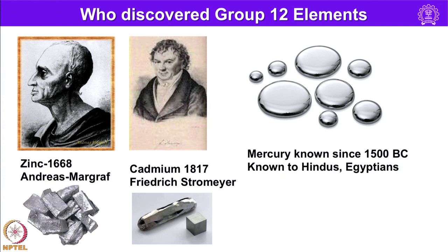Zinc was discovered in 1668 by Andreas Margraf. Cadmium was discovered in 1817 by Frederick Strohmeyer. Mercury has been known since ancient times — since 1500 BC — and was known to Hindus even earlier; Egyptians also knew how to extract mercury from its ore cinnabar. In many aspects, zinc and cadmium compounds are very similar to the analogous magnesium compounds and have the same structures.